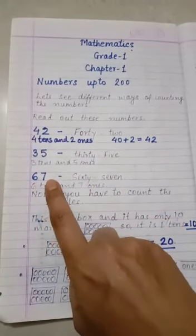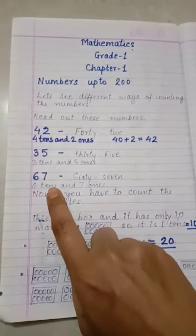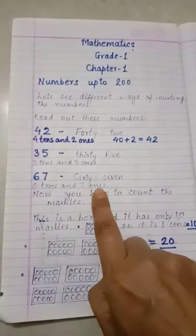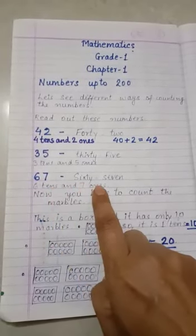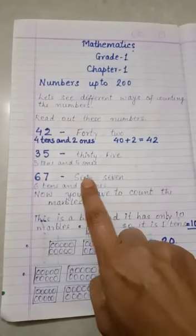The next number 67. 6 at the tens place and 7 at the ones place. 6 tens equals to 60 and 7 ones equals to 7. So, it is 67.